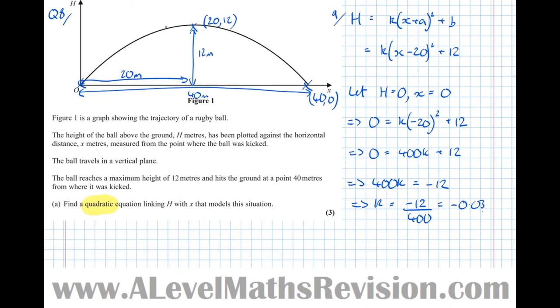So finally writing the quadratic out, that means that h equals minus 0.03 times x minus 20 squared plus 12.